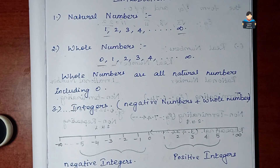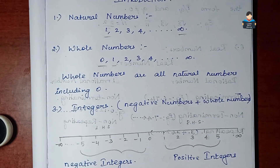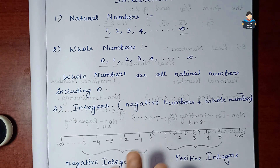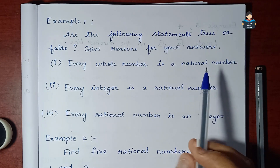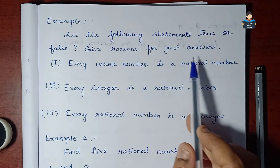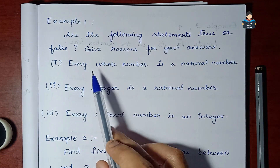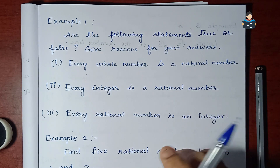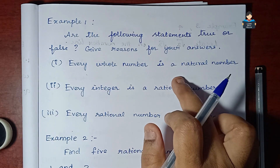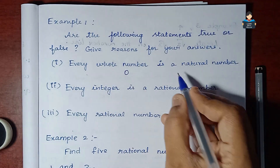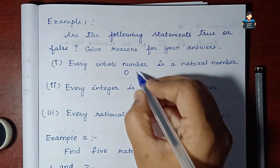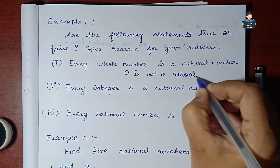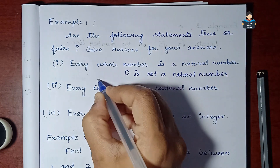In the introduction part, we covered natural numbers, whole numbers, integers, rational and irrational numbers, which are all divided under real numbers. Now let's look at Example 1: Are the following statements true or false? First question: Every whole number is a natural number. This is false, because zero is a whole number but zero is not a natural number.